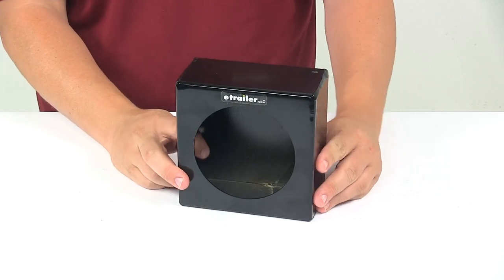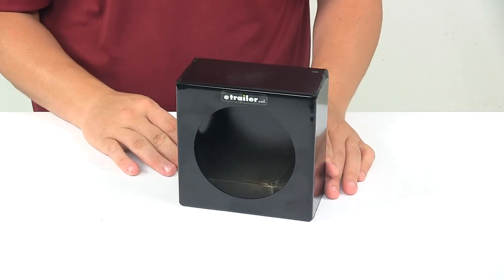The lights would mount to the box using mounting grommets. Lights and grommets are sold separately and available at eTrailer.com.